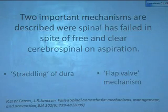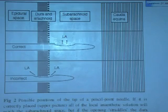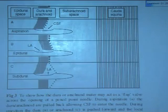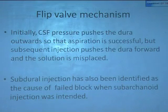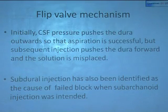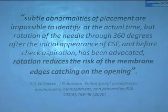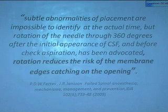They mentioned a straddling mechanism and a flap valve mechanism. With straddling, if the needle is partially in and out, the drug may not be deposited properly — some local anesthetic reaches CSF and some goes into the epidural space. With the flip valve mechanism, the dura is tucking in, you get good CSF flow, but while injecting you end up injecting subdurally. Initial CSF pushes the dura outward so aspiration is successful, but subsequent injection pushes the dura forward and the solution is misplaced. Subdural injection has been identified as a cause of failed block when subarachnoid injection was intended. Rotation of the needle through 360 degrees after the initial appearance of CSF and before check aspiration has been advocated, as rotation reduces the risk of membrane catching on the opening.